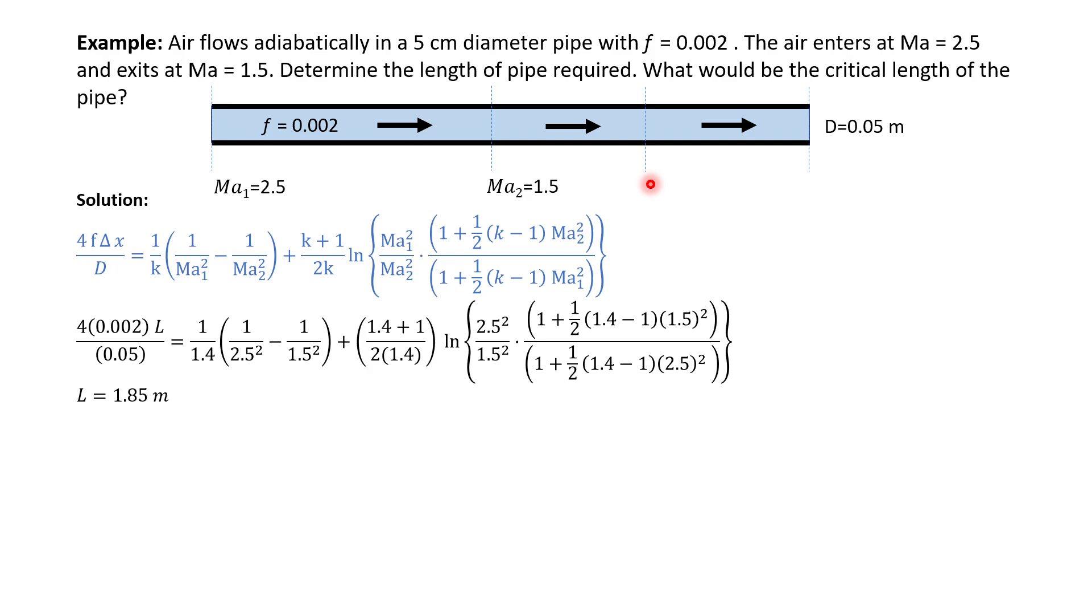So this is a straightforward problem. You can easily insert all of the known parameters. Remember this is air, so air has k equal to 1.4. Delta x is the one that we are trying to find out. Diameter is given. Friction is given. So we end up with only delta x that is not known. We find out that the L equals 1.85 m. That's for the first question.